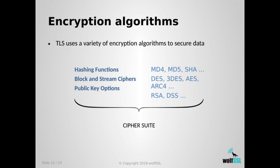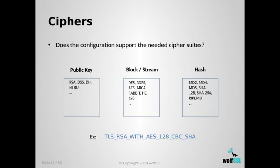TLS uses a variety of encryption algorithms — complex encryption, verification, and hashing functions. When you put many of those algorithms together for different purposes, you end up with something called a cipher suite, which needs to be negotiated and must match between client and server. During the handshake, there is a negotiation to find a matching set of algorithms supported by both sides. You need a public key mechanism, an asymmetric key, a block or stream cipher, and a hashing function for verification — assembled together into a cipher suite.